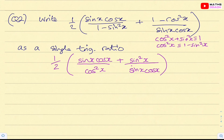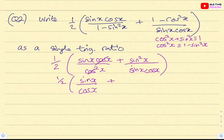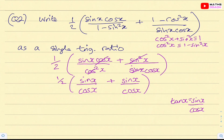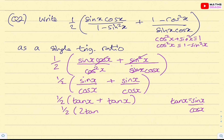Replacing the denominators, we get sin x cos x over cos squared x plus sin squared x over sin x cos x. We cancel, leaving a half times the bracket sin x over cos x plus sin x over cos x. Since tan x equals sin x over cos x, we substitute to get one half times tan x plus tan x, which is one half times two tan x, giving us tan x as a single trig ratio.